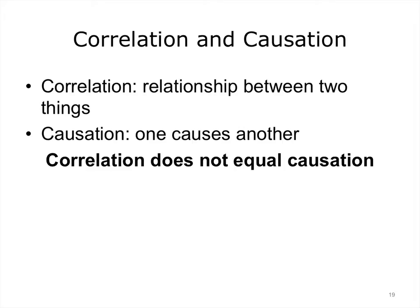Two important concepts in statistics and analytics are correlation and causation. Correlation is the relationship between two things — in statistical analysis, it is a measurement of the relationship between two variables. Causation is that one thing causes another thing. For example, we know that the measles virus causes measles disease, and smoking causes certain types of lung cancers. However, an important concept to remember is that just because there might be a statistical correlation between two things does not mean that one causes the other. For example, there might be a statistical correlation between patients with a particular eye color and a certain disease, but the eye color is not the cause of the disease.